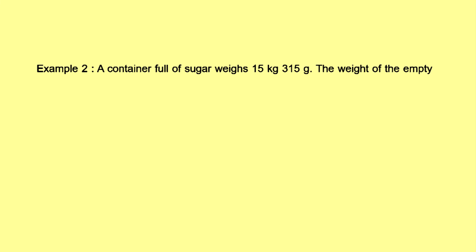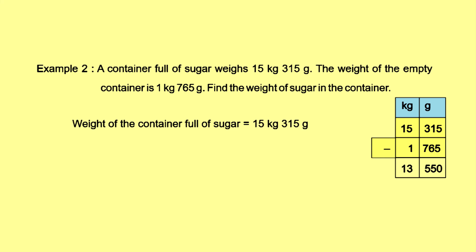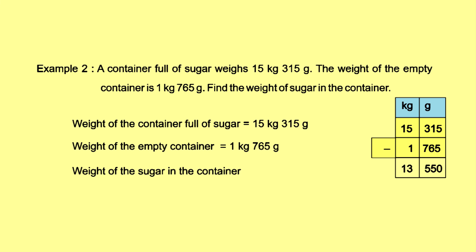Example 2: A container full of sugar weighs 15 kilograms and 315 grams. The weight of the empty container is 1 kilogram and 765 grams. Weight of sugar = 15 kg 315 g − 1 kg 765 g = 13 kilograms and 550 grams.